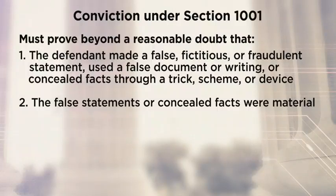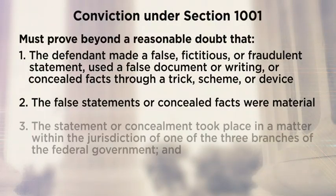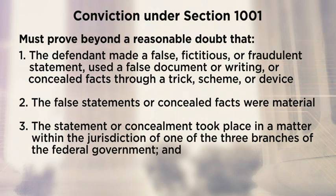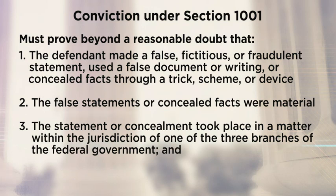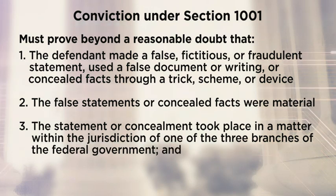The next element is that the false statement or concealment was in a matter within the jurisdiction of one of the three branches of the federal government. This requirement serves to establish a basis for federal criminal jurisdiction. The lies must be in connection with the business of the federal government. Lying to your boss at a private company, your neighbor, or even to a state agency generally will not fall within the false statement statute.